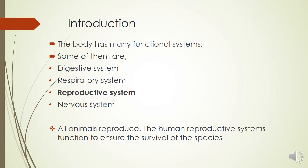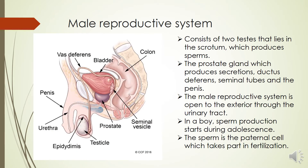All animals reproduce, and the human reproductive systems function to ensure the survival of the species. With our reproductive systems we are ensuring that the survival of humankind. So first of all we are going to talk about the male reproductive system.